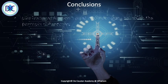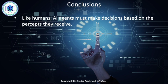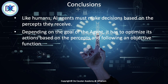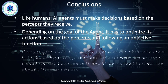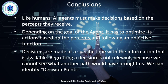Let's look at some conclusions. Like humans, artificial intelligence agents must make decisions based on the information they receive. We get information, the AI agent gets information, and based on that information we make decisions. The goal of the agent is very important because defining the goal will also provide us with information about the objective function — what objective function we have to use, what the parameters are, and how we will evaluate this. When we look at decisions at specific times, we make them always only with the information that is available.